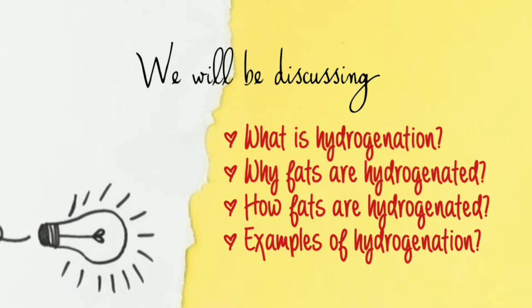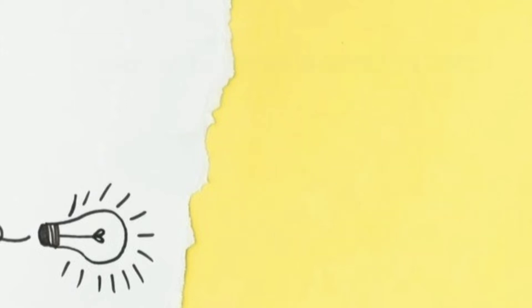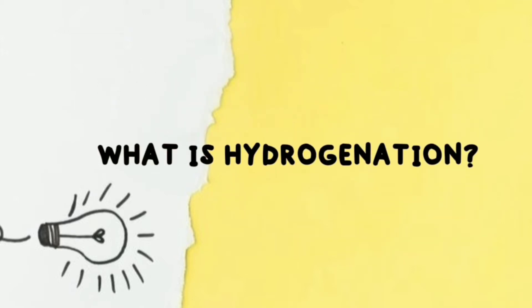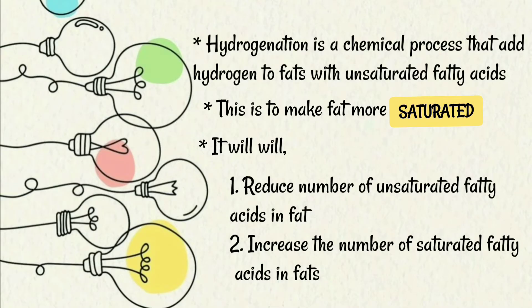And finally, examples of hydrogenation. Let us begin with our first topic: what is hydrogenation? Hydrogenation is a chemical process that adds hydrogen to fats with unsaturated fatty acids, to make the fats more saturated. Hydrogenation will reduce the number of unsaturated fatty acids in fat and increase the number of saturated fatty acids in fat.